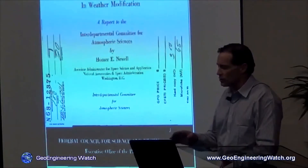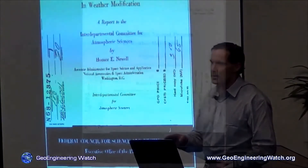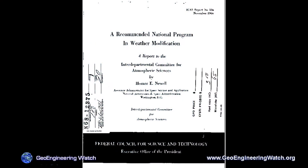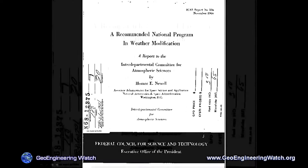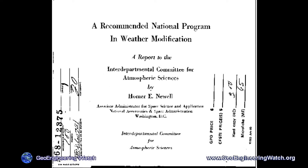This document is important — it's only the cover page. This site can be found at geoengineeringwatch.org. This document from 1966 is a presidential document by NASA outlining the U.S. weather modification programs as of 1966, with budgets in the hundreds of millions of dollars even then.